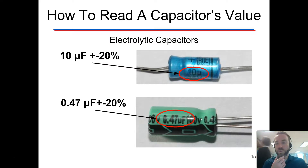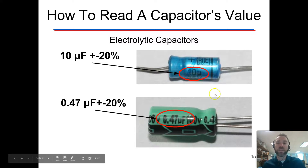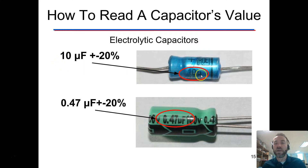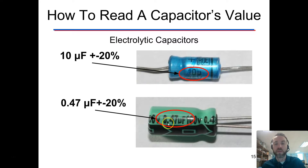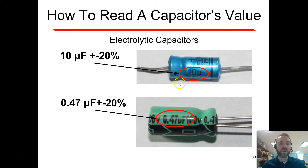How to read them. With the electrolytic ones, those are very easy — you just read them straight off the side. Here we have 10 microfarads. There's no tolerance listed, so we're going to assume plus or minus 20 percent. The second one here reads 0.47 microfarads, and again it's plus or minus 20 percent. For the most part, electrolytic capacitors are listed in microfarads.